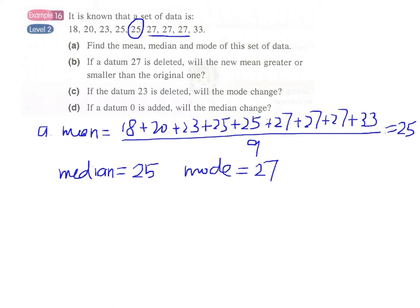That is, we now cross out one 27. And actually, the new mean can be recalculated by adding all the remaining numbers and then dividing by 8. But the problem requires us just to answer whether the new mean will be greater or smaller.